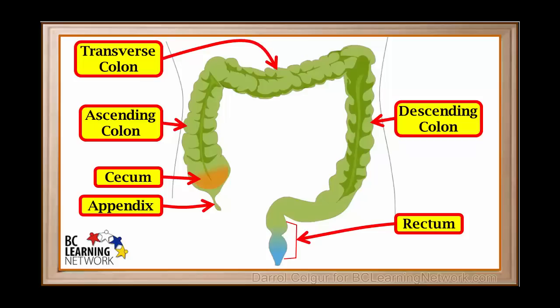The rectum is a pouch near the bottom of the digestive tract. It can expand to store feces. And the anus is the opening at the very end of the digestive tract.